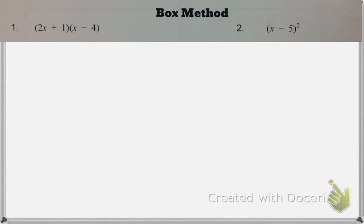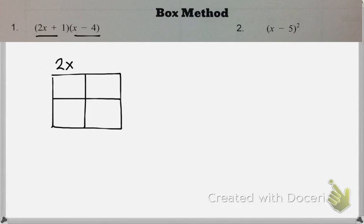So here, since I'm multiplying a binomial times a binomial, I'm going to make a 2 by 2 box, like this. And on one side, I'm going to put both of my terms, 2x and positive 1. And then going up and down, I'm going to put my other terms, x and negative 4.